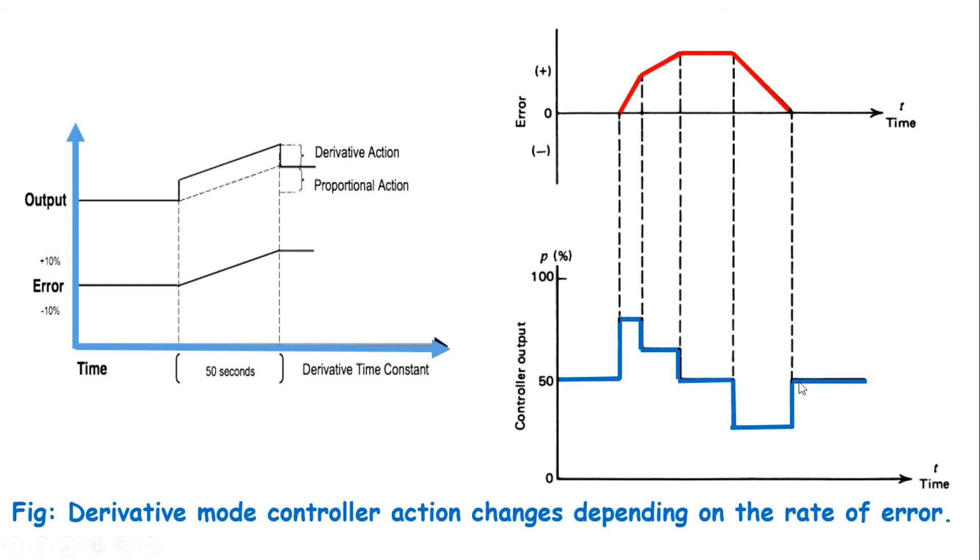The derivative mode must be used with great care and usually with a small gain because a rapid rate of change of error can cause very large sudden changes of controller output. Such an event can lead to instability.